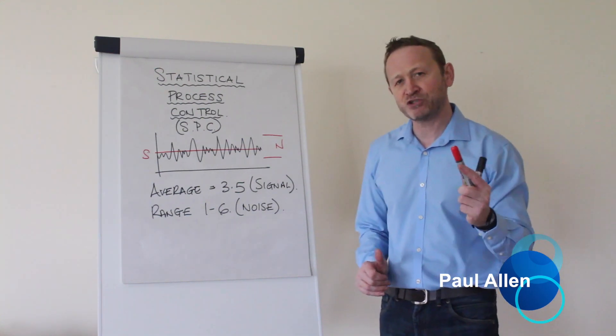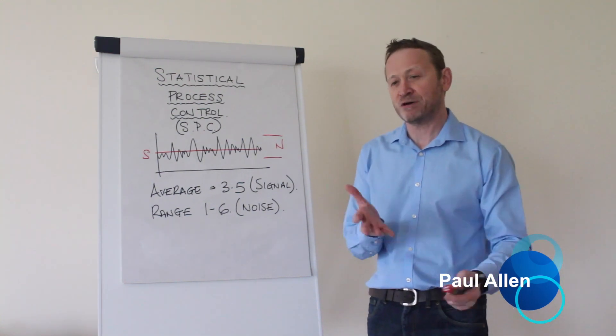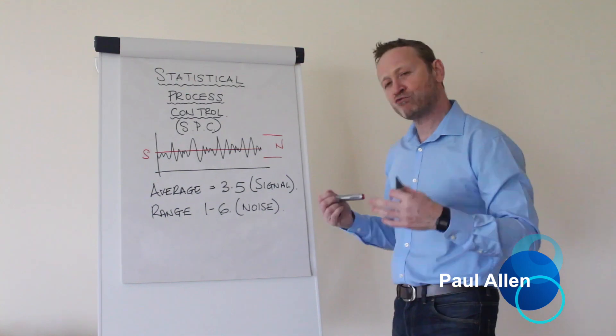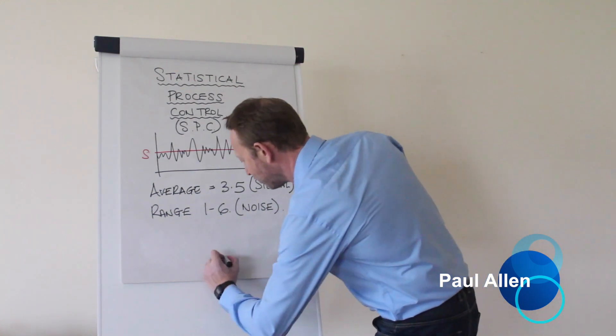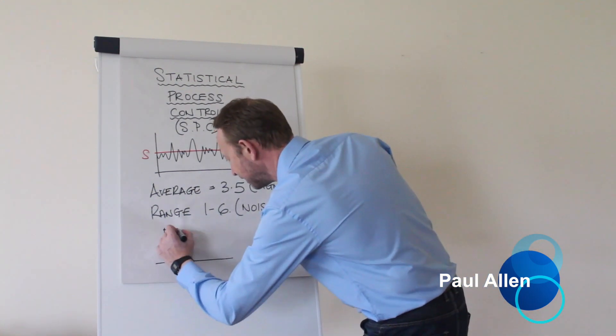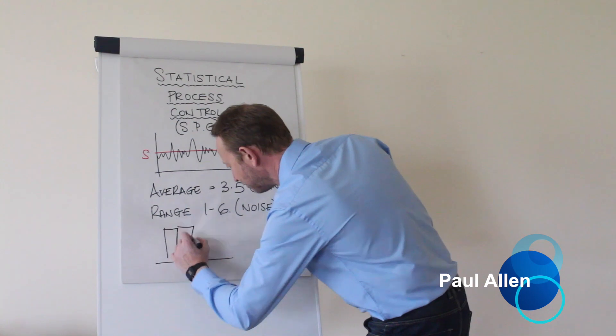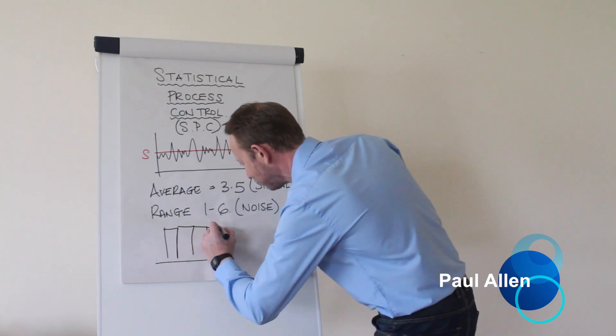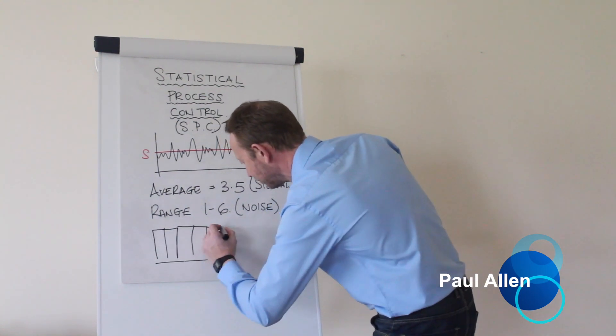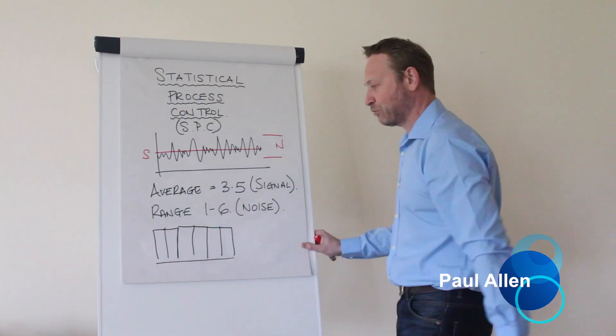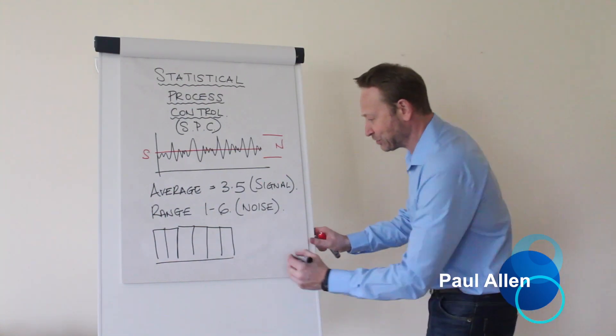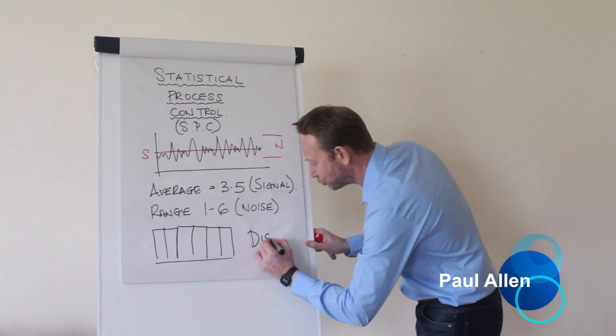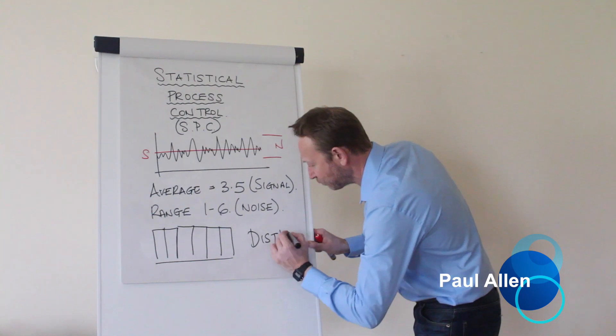And finally, I understand the distribution. I understand the way the numbers are going to come at me. So if I roll a dice a thousand times, what am I going to get? Well, I'm going to get this uniform distribution. There's an equal chance of getting 1s, 2s, 3s, 4s, 5s, and 6s. So I understand the shape or the distribution.